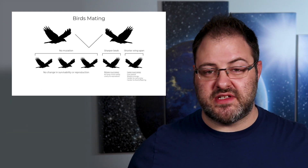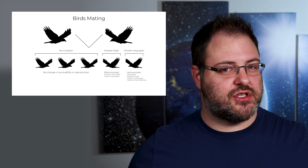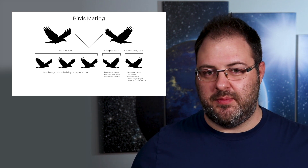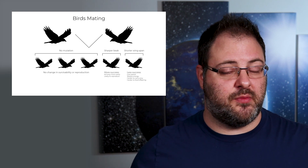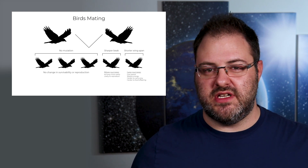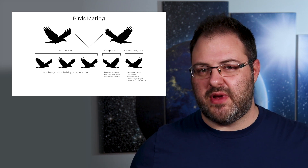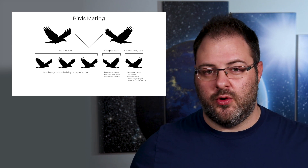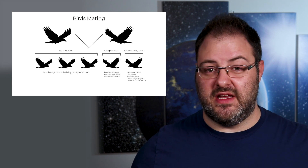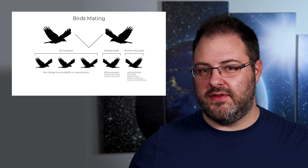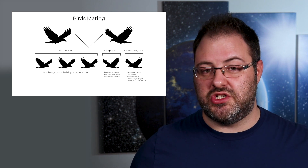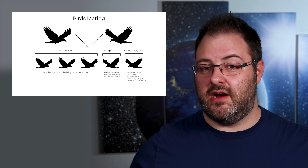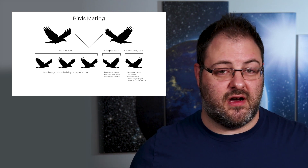As the offspring grow up and start hunting for themselves, the one with the sharper beak has more success on average and lives healthier than the rest. The three that are similar to the parents also have the same average success as their parents. The one with the shorter wingspan has less success in general — it might even starve to death from the inability to eat safely high in a tree, or be unable to feed its own offspring. All in all, the sharper beak will be most likely to pass on its genes, while the shorter-winged one might not even be able to take care of offspring at all.